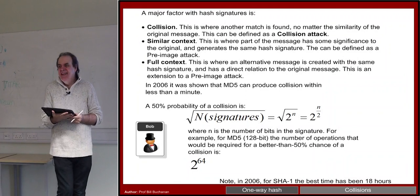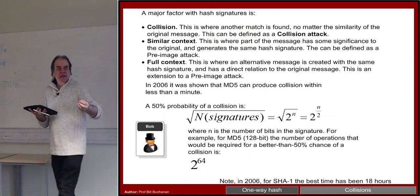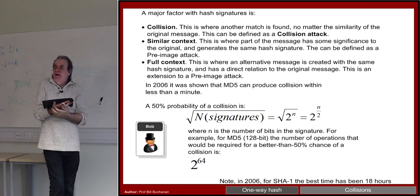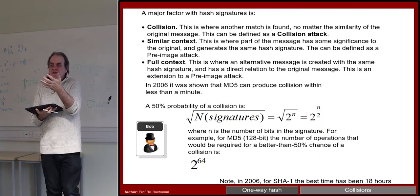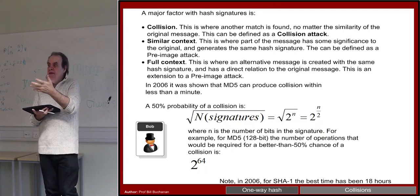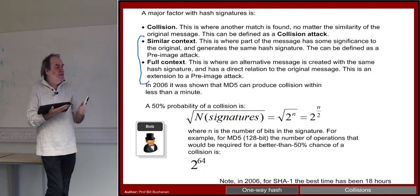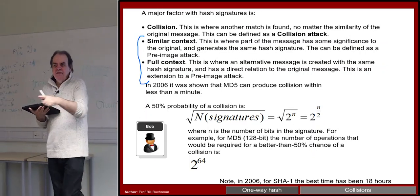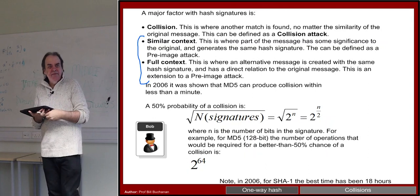The problem with hashing is that eventually you will have a collision — two different data values that create the same hash value. That might not matter for random data, but the real problem is: can I create a different image or Word document that says something different but still produces the same hash value? That's the challenge. It happened with the Microsoft Windows 10 certificate — a different digital certificate could be created that looked valid.